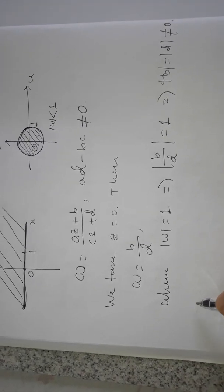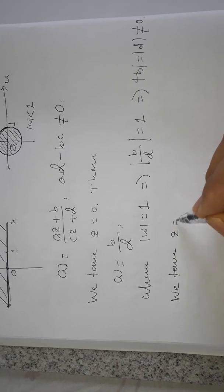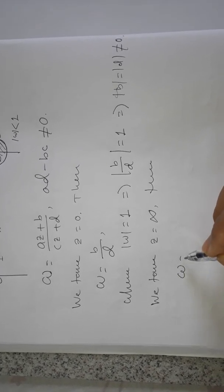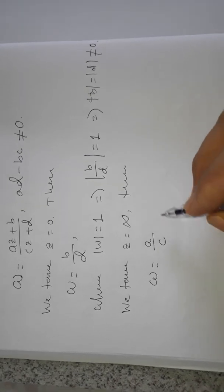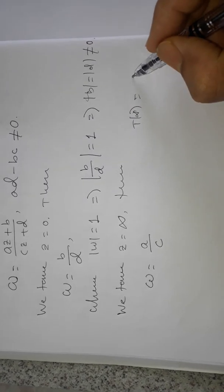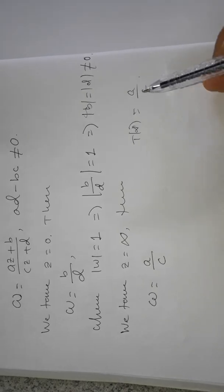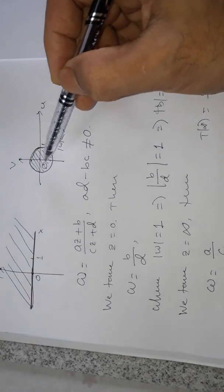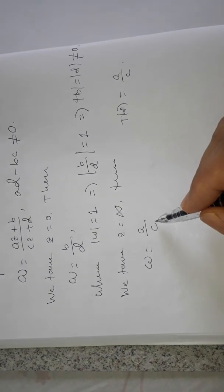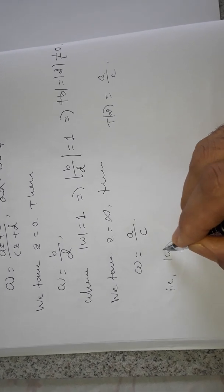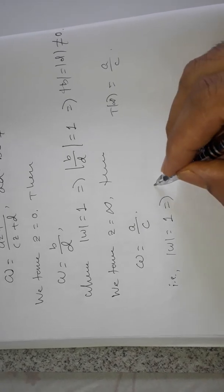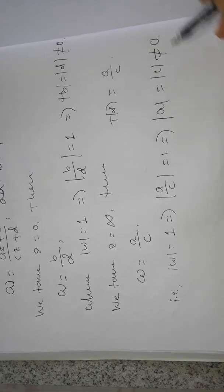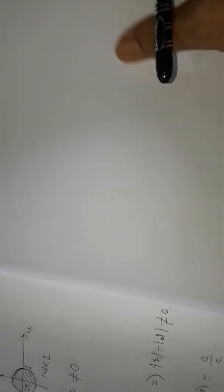Similarly, for z = ∞, w = a/c, because we know that the point at infinity maps to a/c when c ≠ 0. The point at infinity should map to a point on the unit circle, not to infinity, so c ≠ 0. Since |w| = 1 on the unit circle, we get |a/c| = 1, which means |a| = |c|, and both a and c are nonzero.